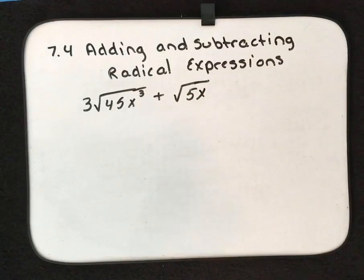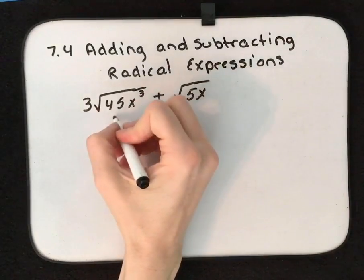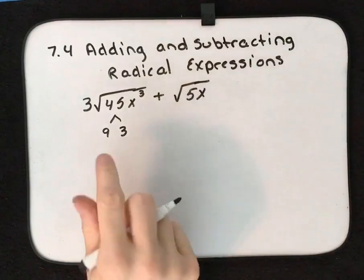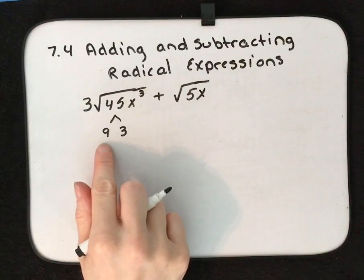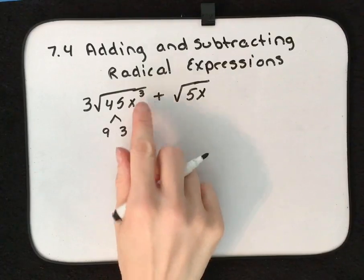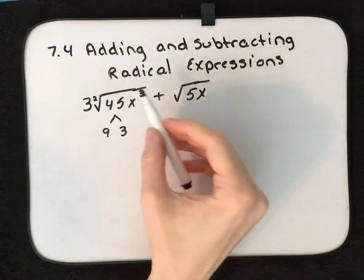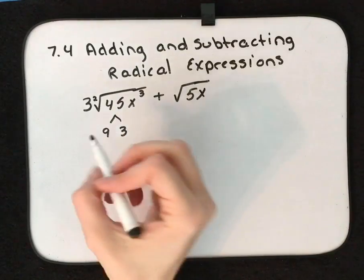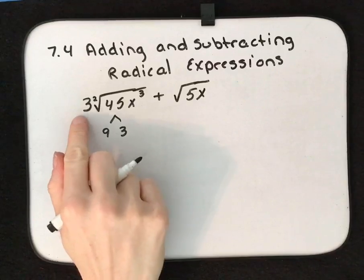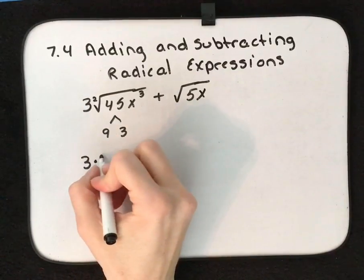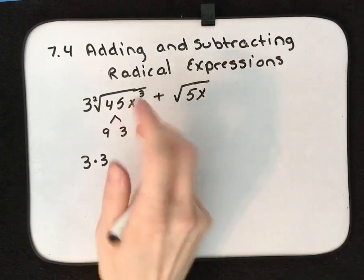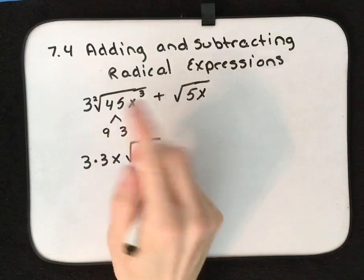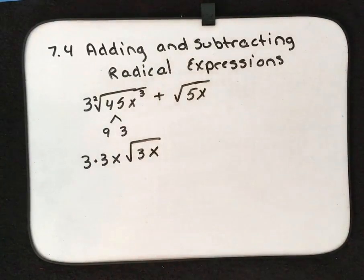So we have 3√(45x³) + √(5x). Well, 45, we can break that down. That's 9 × 5. The square root of 9 is 3. x³, we can break that down. Remember, this is a square root, so it would be 2. If I were to divide 3 by 2, I would get 1 with 1 left over. So that would give us 3 from right here. The square root of 9 is 3. The square root of x³ is x with an x left over inside.